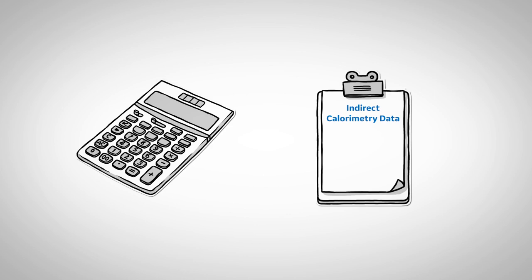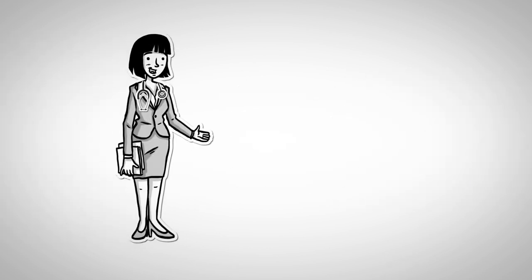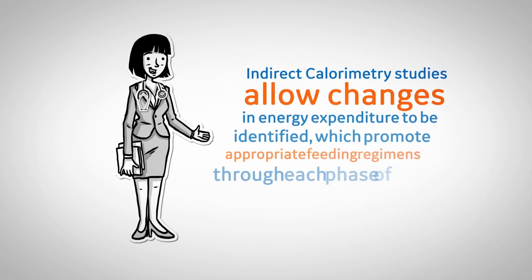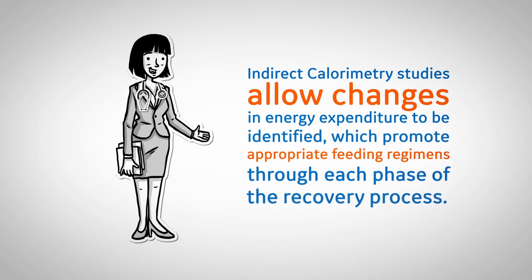What do we find? Our patient needs 2,259 calories on day 8, and on day 14 she needs 2,730 calories. Had we relied on predictive equations, we may have underfed our patient. Also note that serial indirect calorimetry studies allow changes in energy expenditure to be identified, which promote appropriate feeding regimens through each phase of the recovery process.